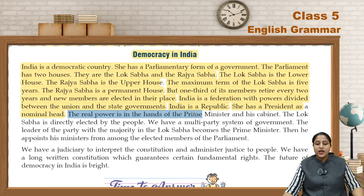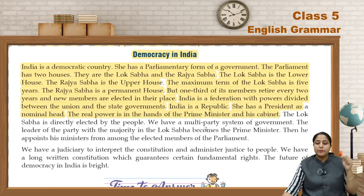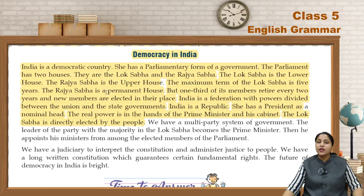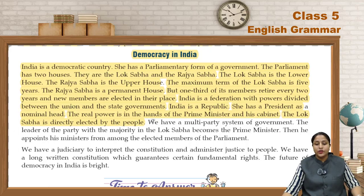The real power is in the hands of the prime minister and his cabinet. Aur jo bhi main power hoti hai, woh prime minister ke haathon mein hoti hai aur unke cabinet ke. The Lok Sabha is directly elected by the people — log elect karte hain, voting ke through.